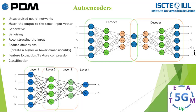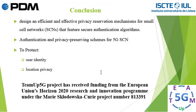The purpose of this project is to design an efficient and effective privacy preservation mechanism for a small cell network, featuring secure authentication output that depends on deep networks as described. Authentication and privacy preservation schemes for 5G small cell networks are aimed at protecting user identity and location privacy. Thank you for watching.